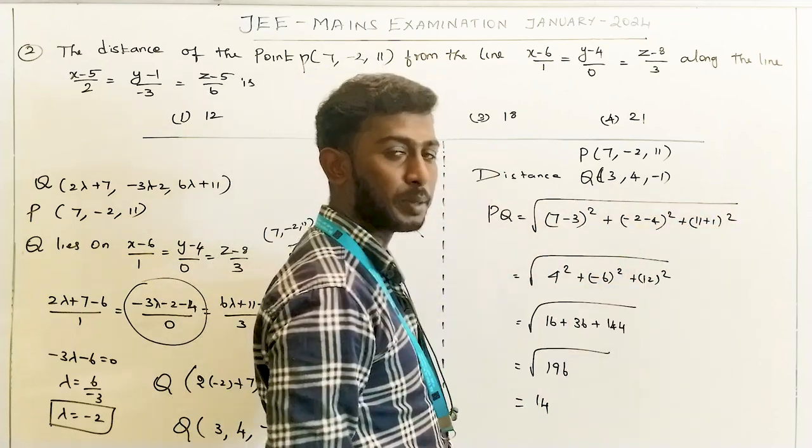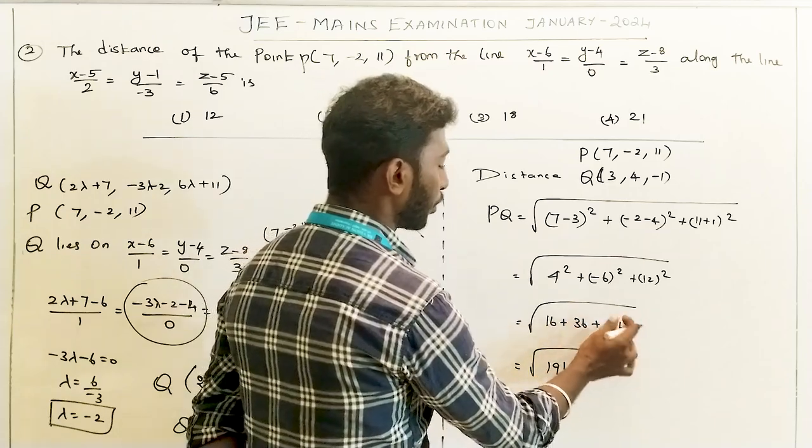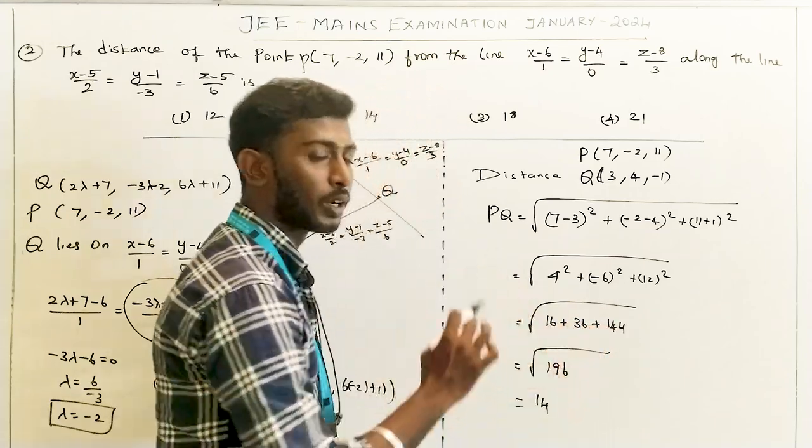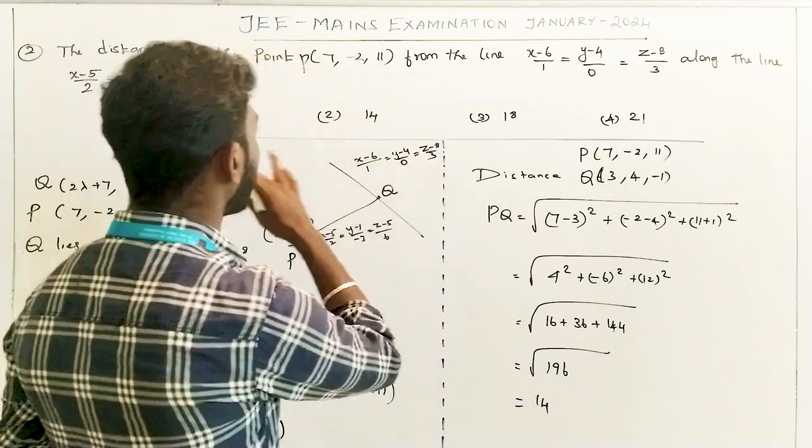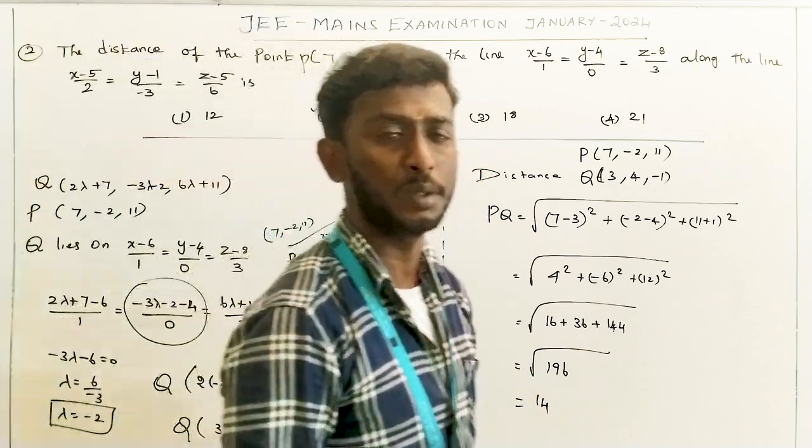So 16 plus 36 plus 144 is the value at this point. We get square root of 196. Square root of 196 is 14. So in the null option, the length option is correct. Option 2 is the correct answer. Thank you.